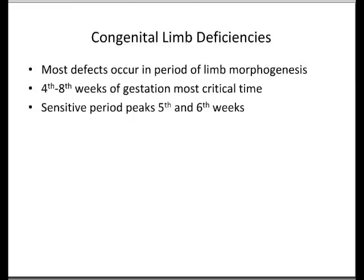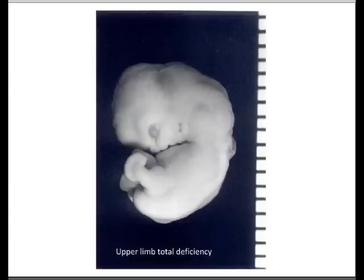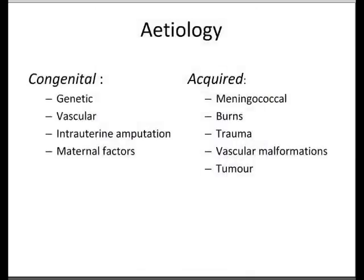This is an example of a young child with an upper limb deficiency. During this talk I'll draw some comparisons between congenital and acquired limb deficiency. In the congenital group there are vascular, genetic, and maternal factors. In the acquired group, the reasons for limb loss are really meningococcal disease, burns and trauma, as well as tumours and vascular malformations — tumours being quite common in the 12 to 21 age group.